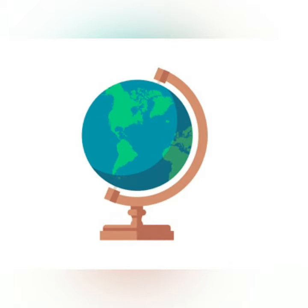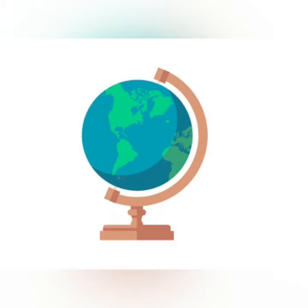Dear students, in the previous chapter you have read that our planet Earth is not a sphere. It is slightly flattened at the poles and bulges in the middle. So the true shape of the earth is geoid, and the globe is a true model of the earth.